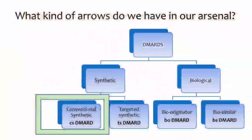What arrows do we have in our arsenal? We have disease-modifying anti-rheumatic drugs which are synthetic, and then we have biologicals. The synthetic include conventional synthetic DMARDs and targeted synthetic DMARDs. We also have bio-originator DMARDs — biologics — and biosimilar DMARDs. The conventional synthetic DMARDs are the key drugs used in the maximum number of patients.